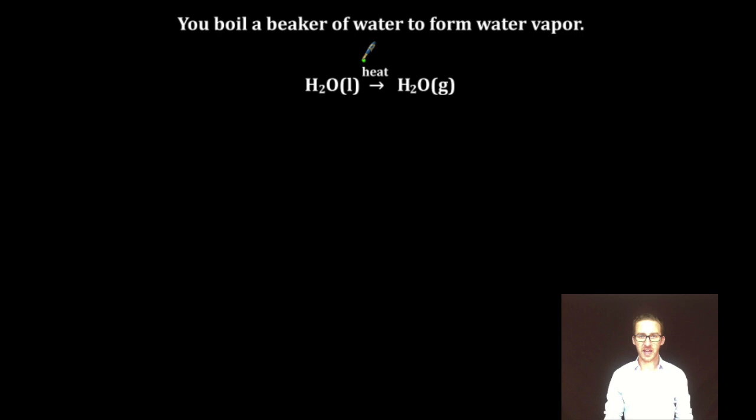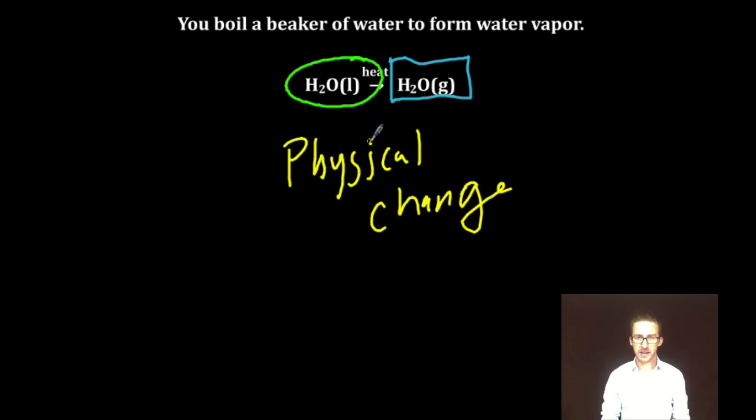All right, let's take a look at this last example here. Reactants. Products. Do we think this is chemical change or physical change? Answer, physical. Boom. Physical. Notice, as you examine the reactants and examine the products, their identity has not changed. What has changed is the phase in which we find that material.